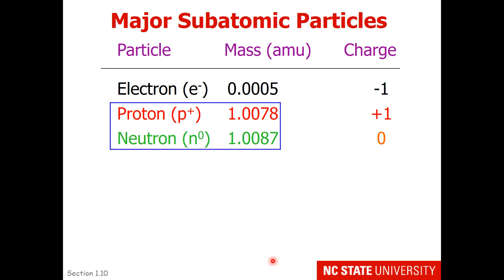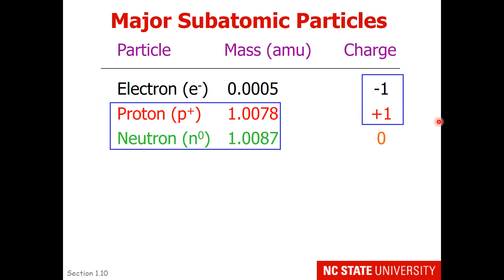The protons and the neutrons, which are in the center of the atom, are the materials that were dense and had mass associated with them. Each of them has one atomic mass unit. Electrons, on the other hand, have almost no mass. As far as the charge on the atom, the two species that are important are the proton and the electron. The electron has a minus one charge, and the proton has a plus one charge.